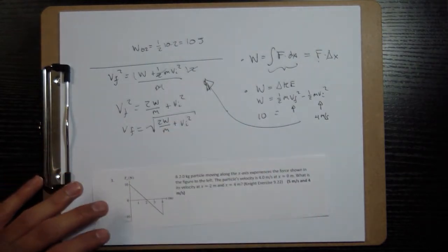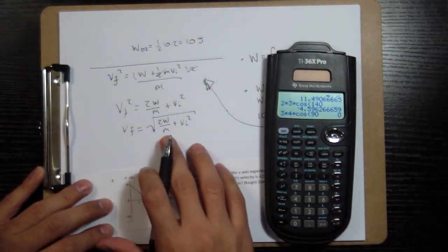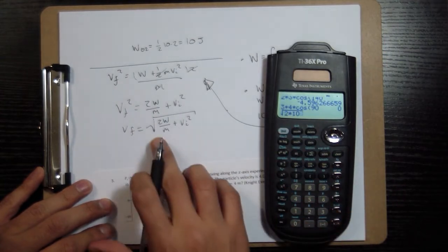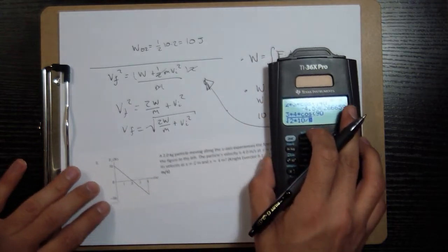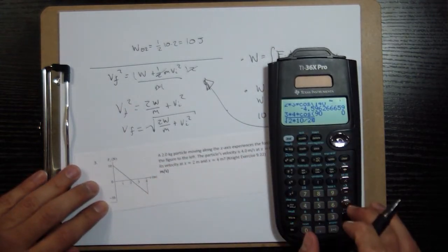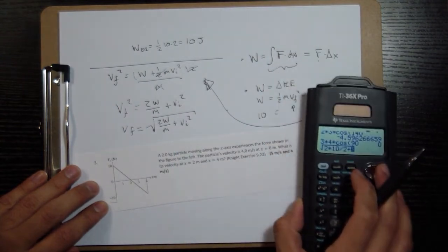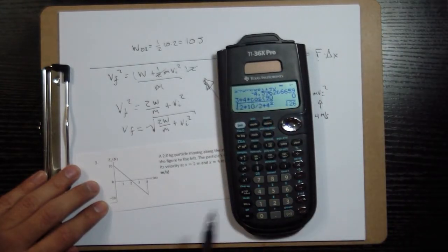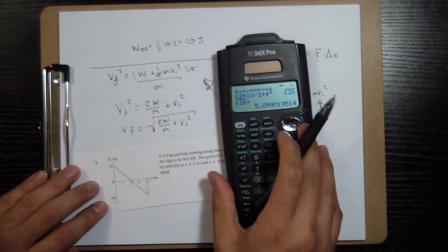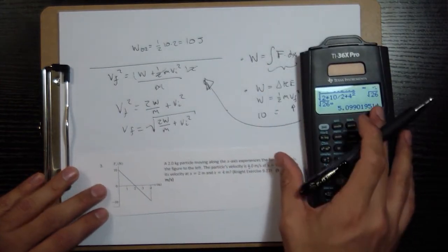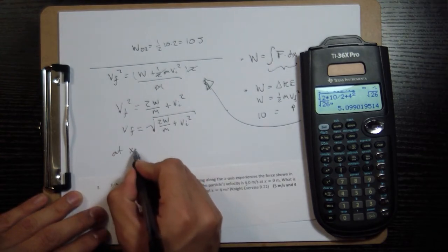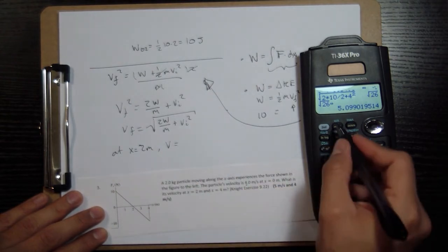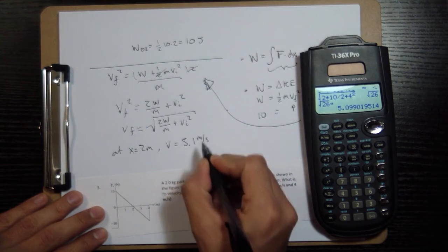So we can plug in 10 for the work. Take a square root: 2 times 10 divided by the mass, we know from the problem that mass is 2, plus the initial velocity which was 4 from the problem, right here, 4, and I get squared. I get square root of 26, turn that into a decimal 5.09, rounds to 5. So for the first part you can see that at x equals 2 meters the velocity is going to be equal to 5 meters per second or 5.1 meters per second.